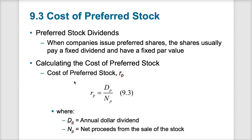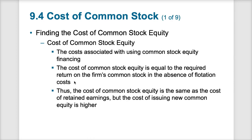Moving on to the cost of preferred stock — preferred stock is a hybrid financial vehicle with properties of both bonds and stock. These shares are preferred because they come with a guaranteed dividend. What makes preferred stock better than debt is that it never has to be paid back, though the dividend will always have to be paid. Where bonds have a fixed life of say 10 or 30 years, preferred stock is continuous with no end date unless repurchased. The cost of preferred stock is simply the annual dividends divided by the net proceeds from the sale of stock.